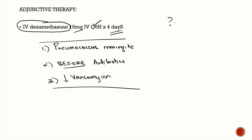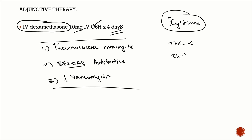The important cytokines involved in inflammation in bacterial meningitis are tumor necrosis factor alpha (TNF-α) and interleukin-1 beta (IL-1β) — both are important MCQ points.